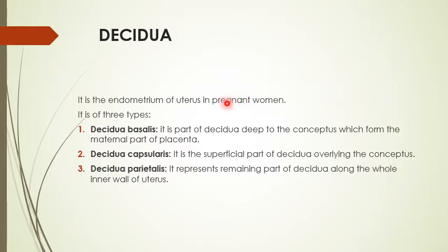The decidua is the endometrium of the uterus in a pregnant woman. This endometrial thickening occurs in the whole of the uterine cavity. The part of the endometrium which undergoes proliferation and is more marked — thick posteriorly and on the fundus in the midline — is given the name decidua basalis.